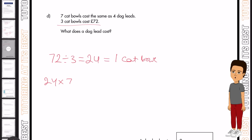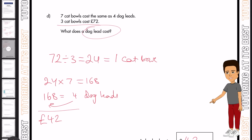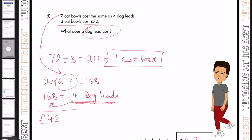We know that we're going to multiply 24 by seven, and that gives us £168. And now we know that £168 is equal to four dog leads. So ultimately, we'll divide that by four and we get £42. And that is our answer, £42 for one dog lead. I've gone ahead and calculated one cat bowl, then multiplied that by seven because seven cat bowls equal four dog leads, and then divided it by four to get the value of one dog lead.